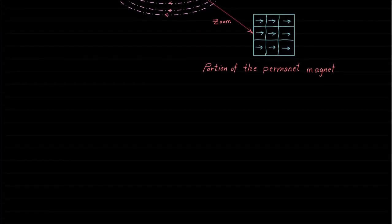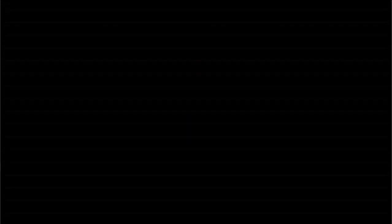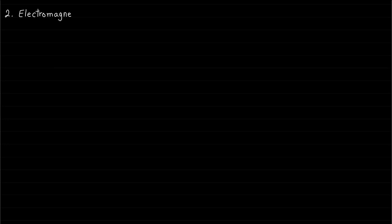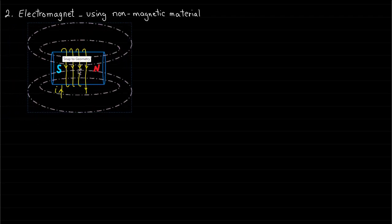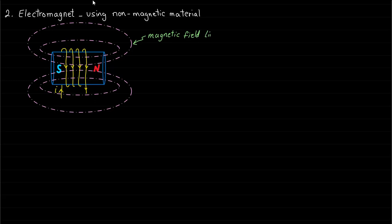The second method of producing the magnetic field is by using an electromagnet, which is created by passing an electric current through a coil around a non-magnetic material, such as air, wood, aluminum, copper, and plastic. The magnetic field lines of this electromagnet emerge from the north pole and enter the south pole. In this example, the electromagnet has a coil of four turns.